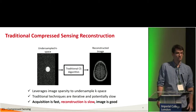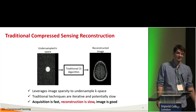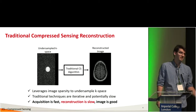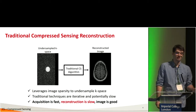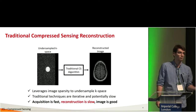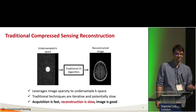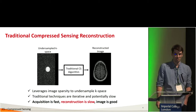Traditional compressed sensing techniques try to leverage image sparsity to under-sample k-space. These techniques are usually non-linear and iterative, so they are kind of slow to reconstruct an image. In this scenario, acquisition is fast, reconstruction is slow, but the image quality is good.